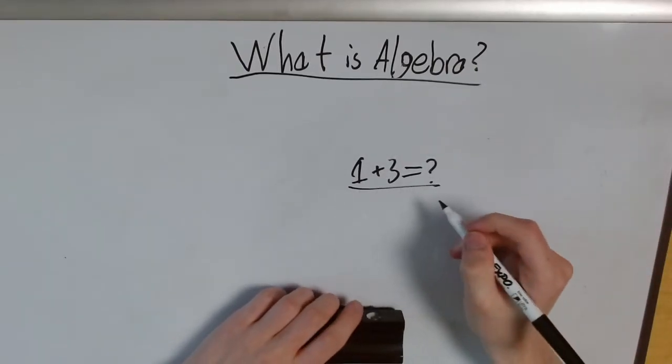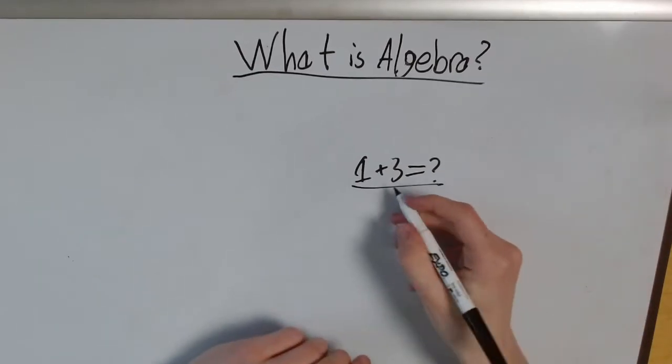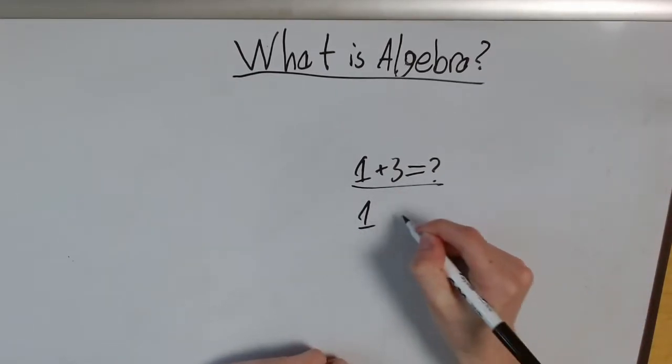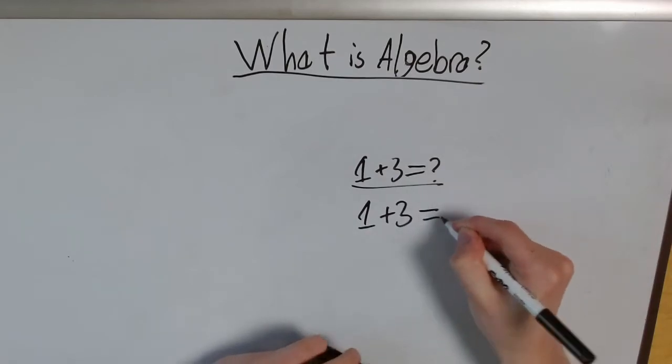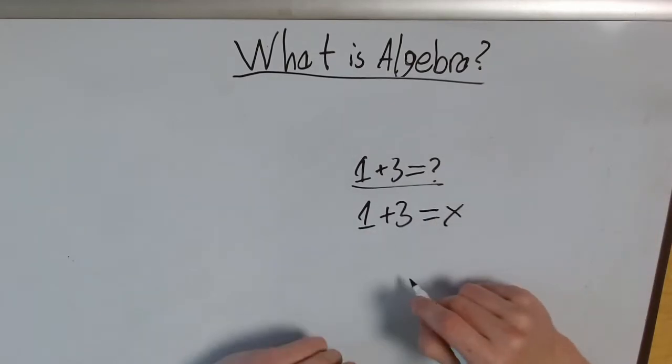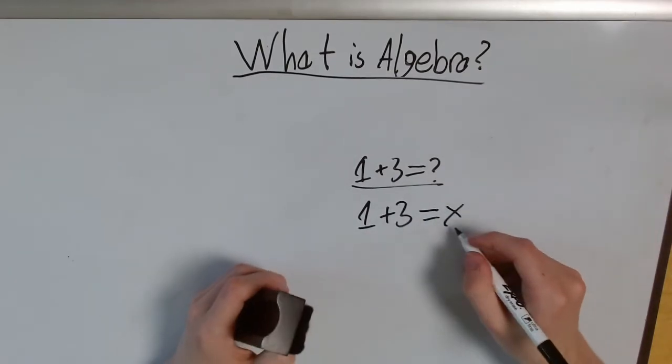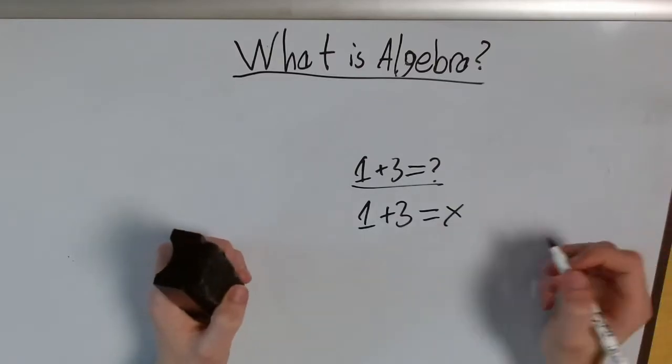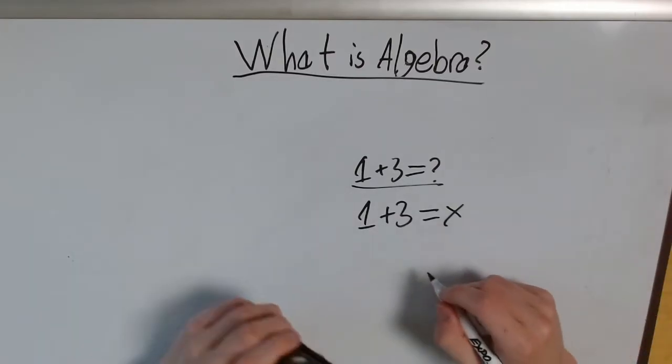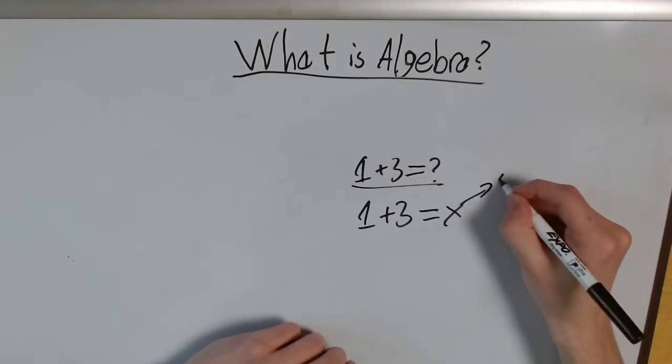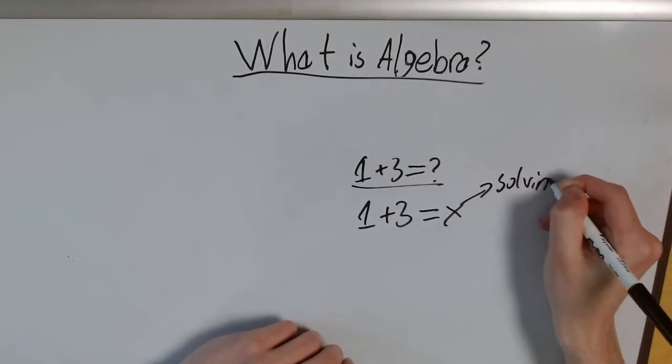So to rewrite this equation in algebraic form or style, we'd say 1 plus 3 equals x. And in this case, and in any case, we want to find the value of this unknown quantity, this variable. In algebra, we call this solving for the unknown.